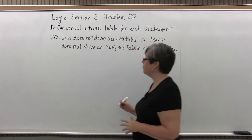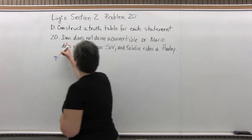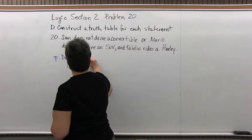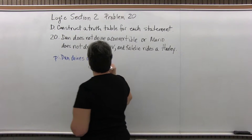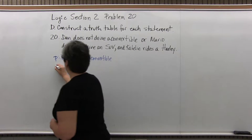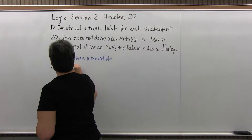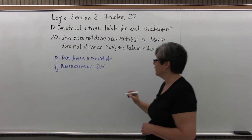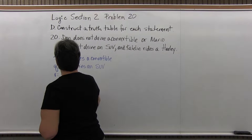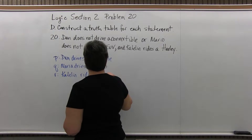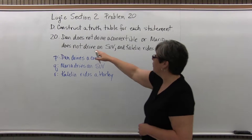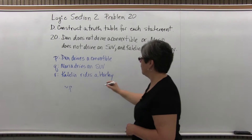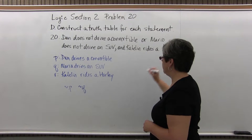We're going to start with defining our simple statements, making sure to make them positive statements. So Dan does not drive a convertible — we'll have P: Dan drives a convertible. Mario does not drive an SUV — we'll have Q: Mario drives an SUV. And our last statement, R: Caitlin rides a Harley. So putting those together, we have the negation of P, the negation of Q, and just R.